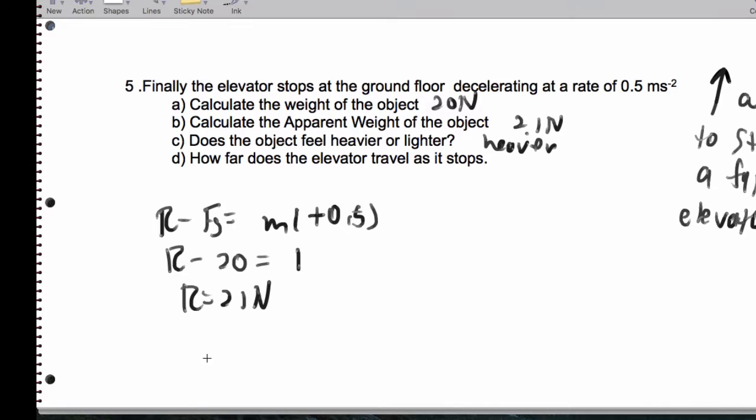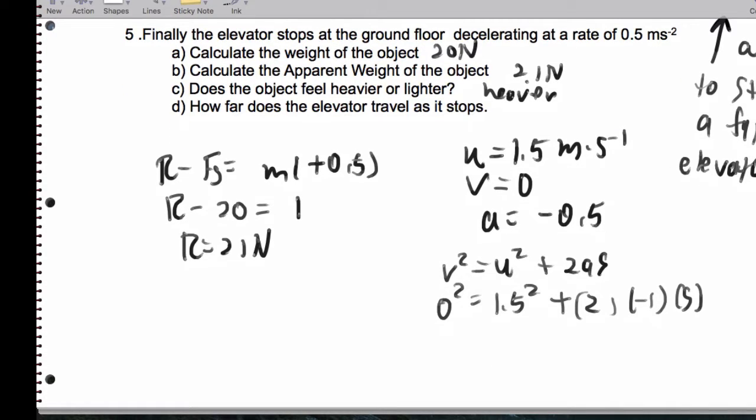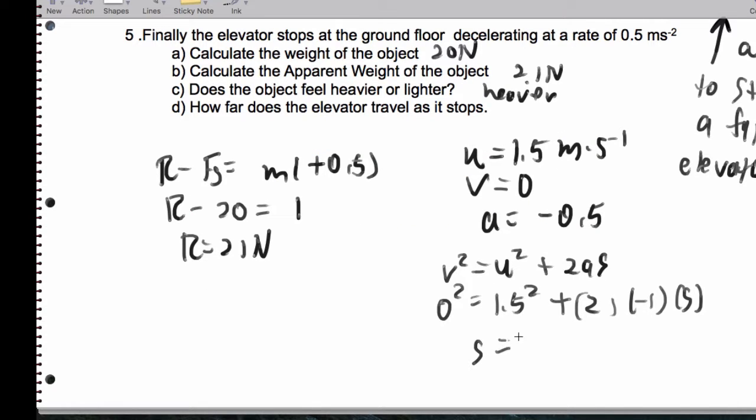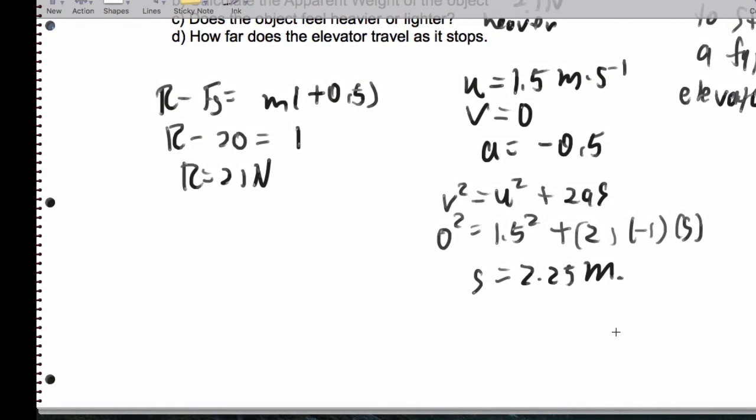And how far do we travel as we stop? Again, our speed as we fell is 1.5 meters per second. Our final speed is 0. Our acceleration is negative 0.5. So V squared is U squared plus 2AS. 0 squared is 1.5 squared plus 2 times negative 1 times S. So S ends up being 2.25 meters to stop. So that is the elevator portion of our homework.